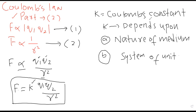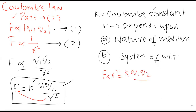सबसे पहले हम k का unit determine करते हैं, उसके बाद value भी determine करेंगे। Here is the equation: F = kQ1Q2/R². I have to rearrange this equation — if R² is moved to the other side it multiplies, giving F×R² = k×Q1×Q2। So k equals F×R² divided by Q1×Q2।